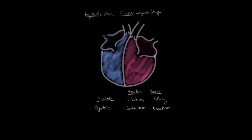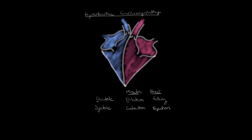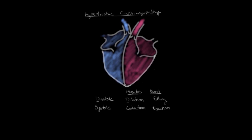Now switching to systole: the muscles of the ventricles are contracting, causing the chambers to get smaller, and blood is being ejected out of the ventricles. You can also notice that during this phase, the atria are filling with blood.